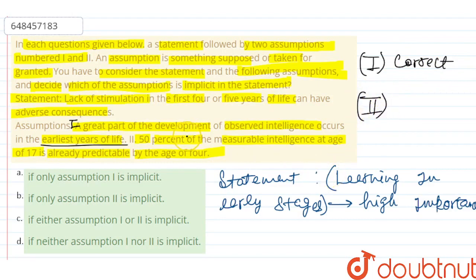Assumption 2. We have a fact given here. The fact given is that 50% of the measurable intelligence at the age of 17 is already predictable by the age of 4. So this is a fact, but we are not sure about this fact.